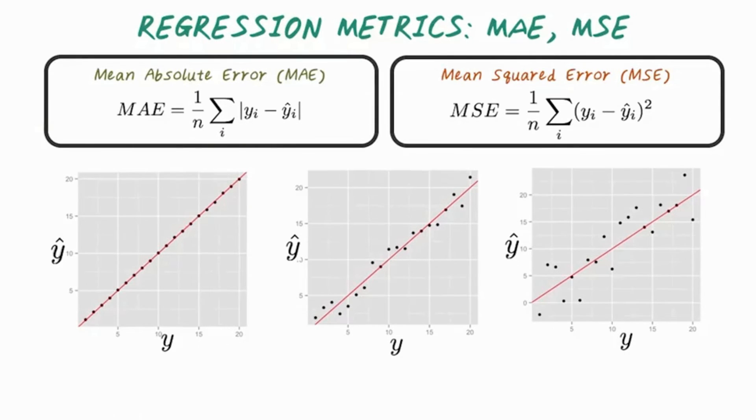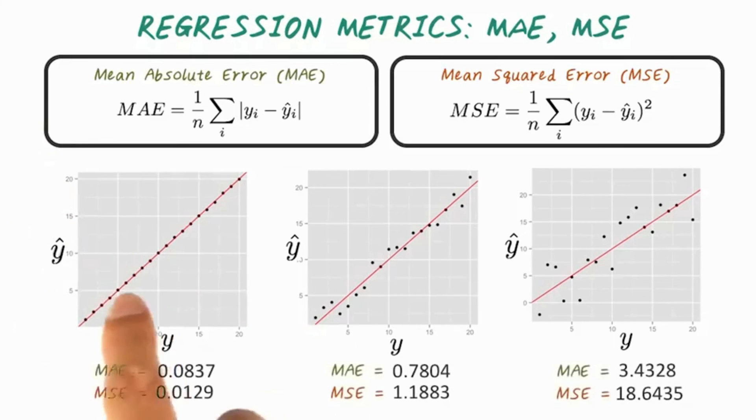Here are some visual illustrations. The x-axis is the ground truth value, and the y-axis is the prediction. As the amount of noise increases from left to right, both MAE and MSE increase. You can also notice that MSE increased a lot faster because of the square of error term.